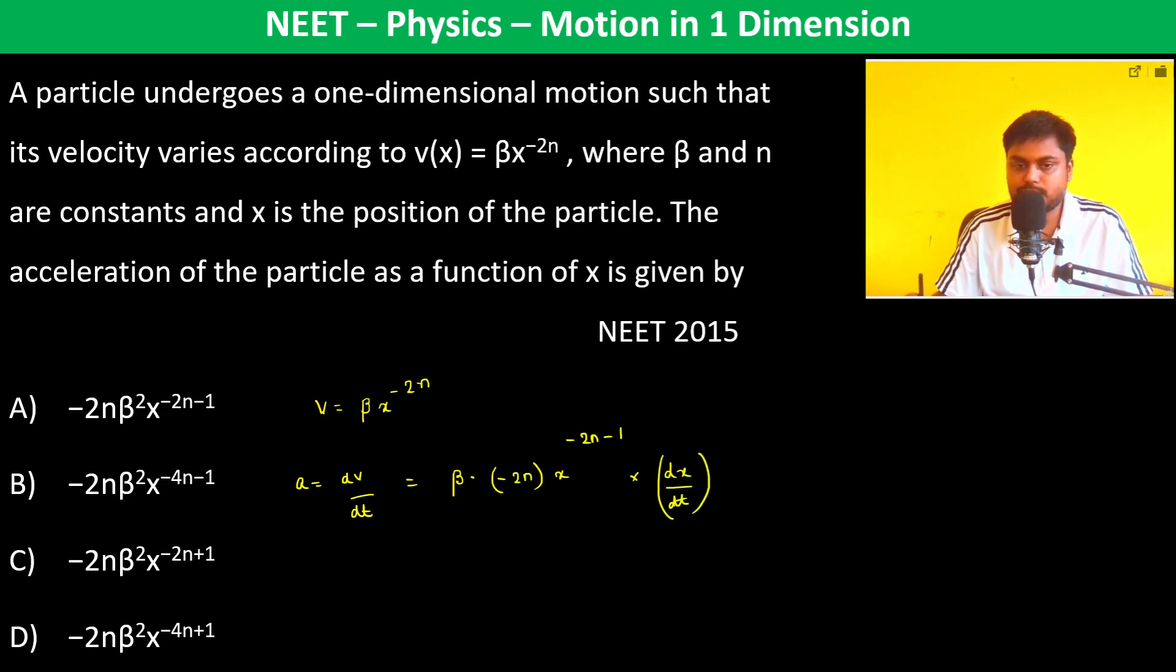Now dx by dt is velocity only, so therefore beta into minus 2n x to the power minus 2n minus 1 into beta x to the power minus 2n, which is equal to minus 2n beta square x to the power minus 4n minus 1. So therefore B is going to be the answer.